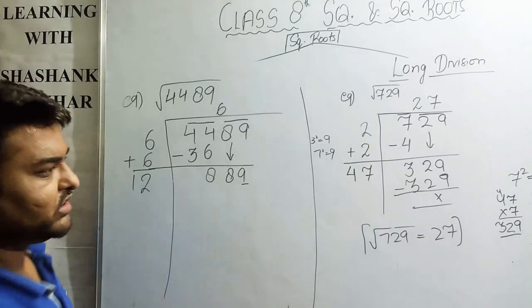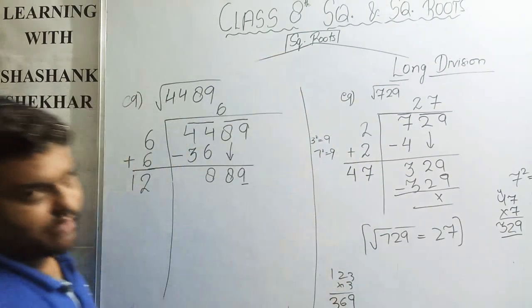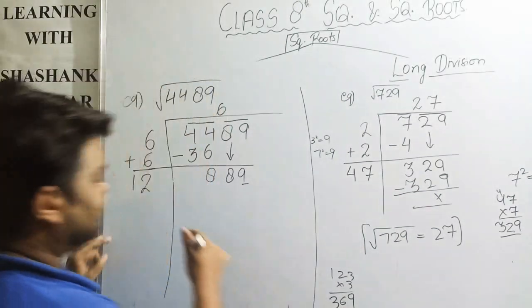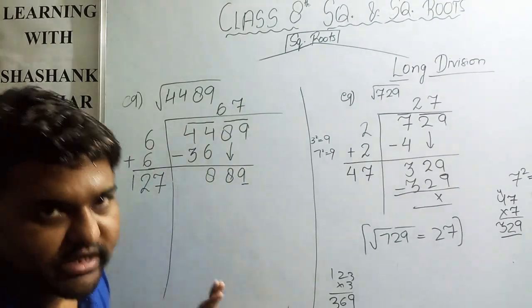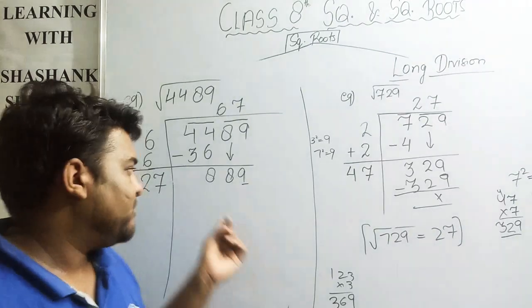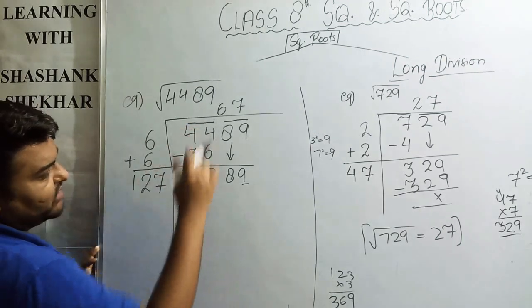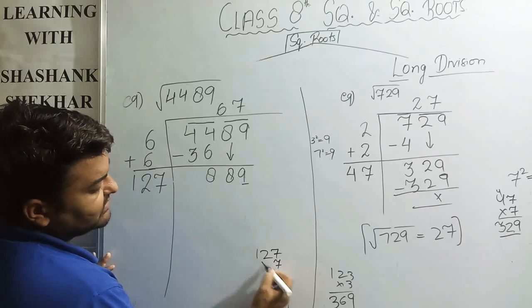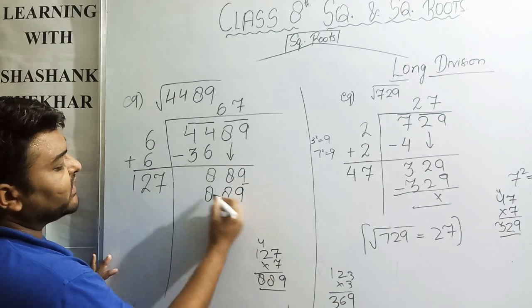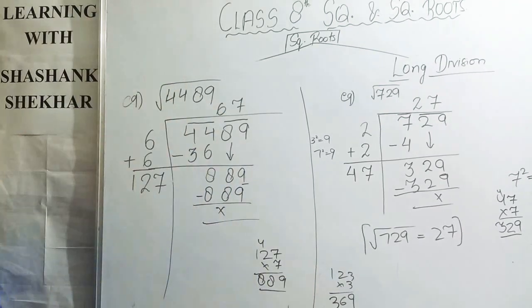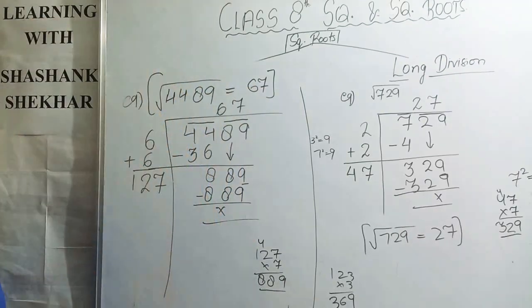We continue the long division: 127 × 7 = 889, so the remainder is 0. Therefore the square root of 4489 is 67. That is the final answer.